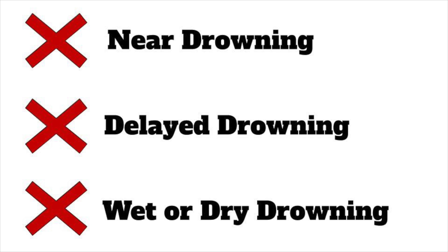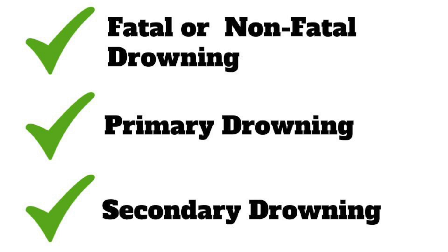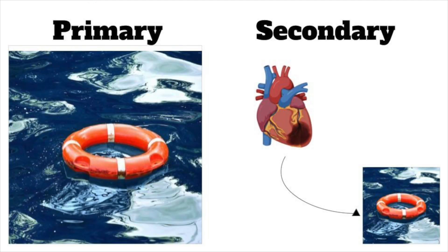Terms that we can use to describe drowning are fatal drowning, non-fatal drowning, and we can also talk about a primary drowning or a secondary drowning. A primary drowning means the only issue affecting the patient is the drowning episode itself, whereas in a secondary drowning, there's another medical condition which led to incapacitation in or around water, and the drowning happens secondary to that primary medical issue.